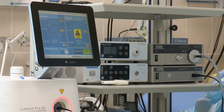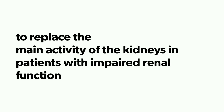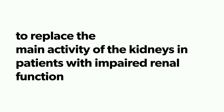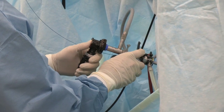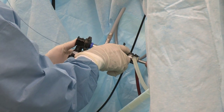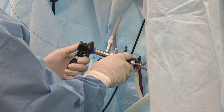The hemodialysis unit is a device that performs extracorporeal dialysis to replace the main activity of the kidneys in patients experiencing impaired renal function, such as those with end-stage renal disease. Blood is taken via the extracorporeal circuit, passed through the dialyser, and returned to the patient.